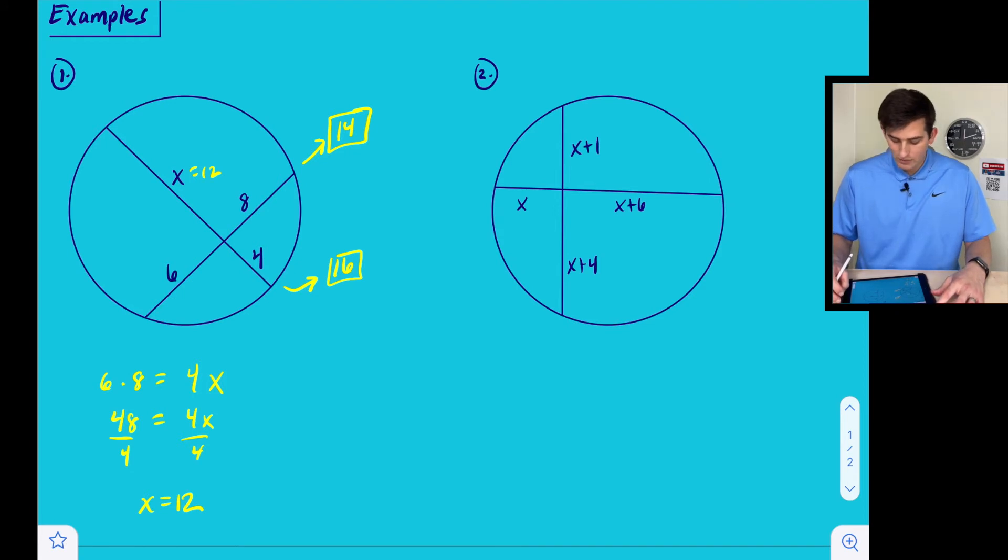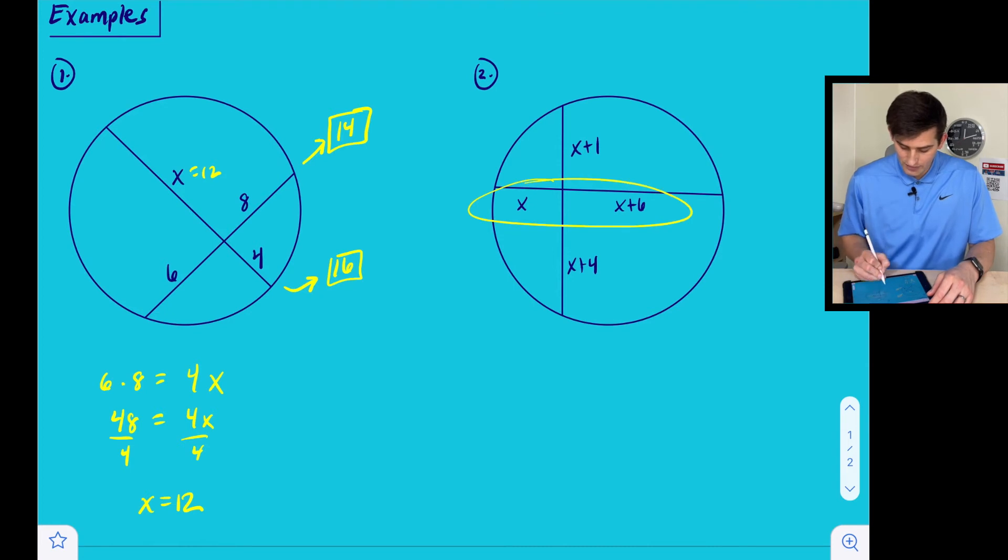All right, now for number two, we have a segment of a chord that is X, a segment that is X plus six, a segment that is X plus one and a segment that is X plus four. So let's go ahead and multiply these together. So the first ones we're going to do will be X times X plus six, and we're going to set that equal to X plus one times X plus four.